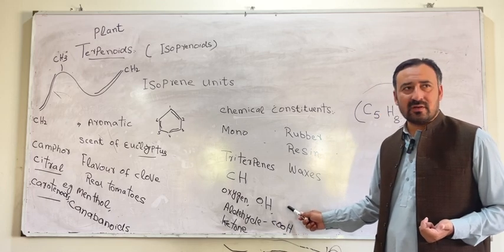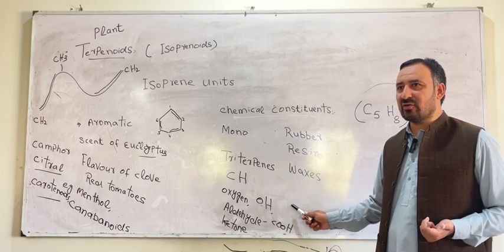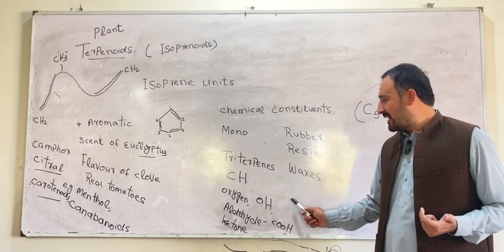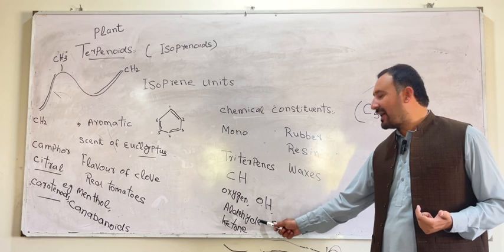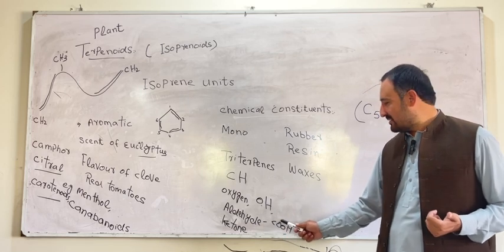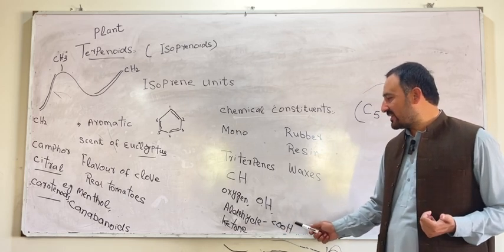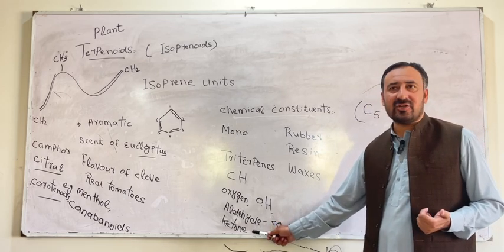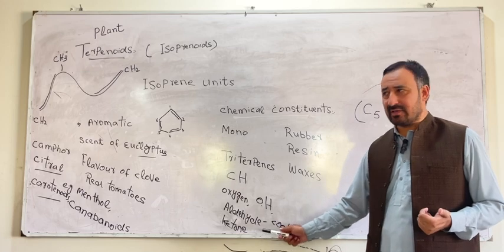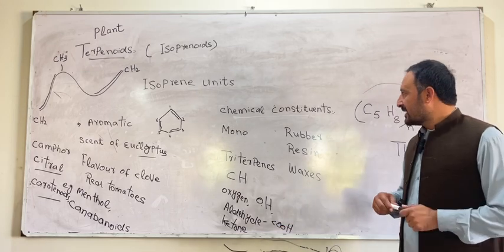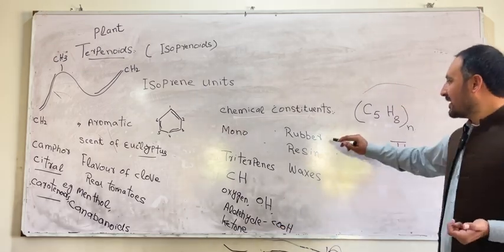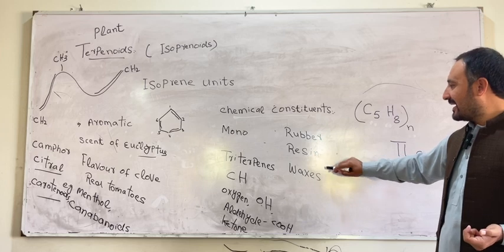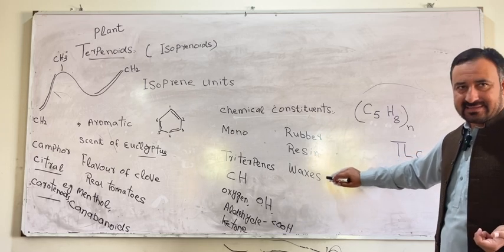It also has an alcohol group — the alcohol group contains OH. It also has an aldehyde group — aldehyde COOH — and it also has a ketone group. Their main examples are rubber, resin, and waxes.